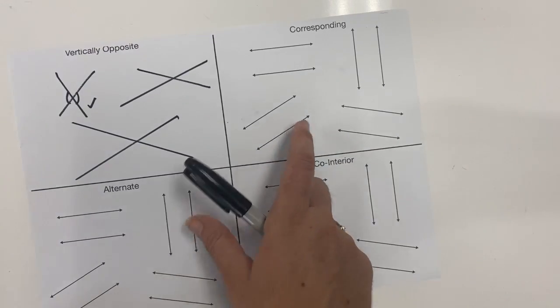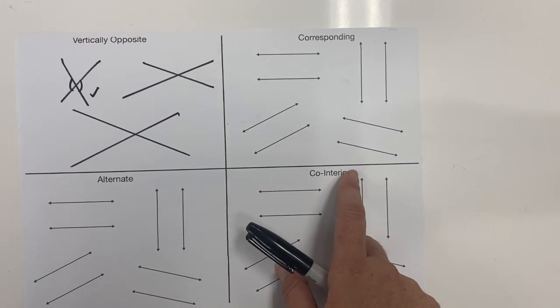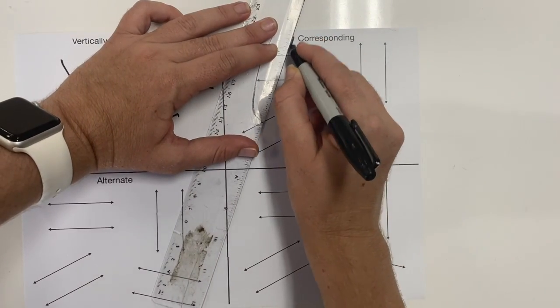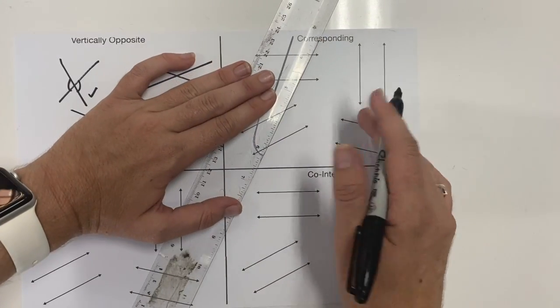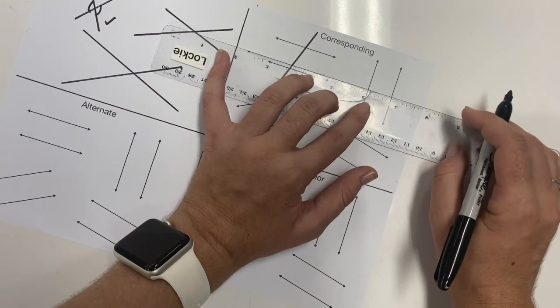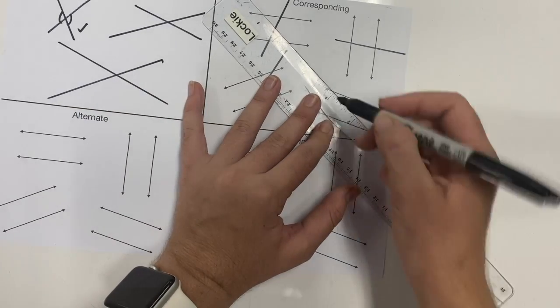For corresponding, I've put some parallel lines on here for you already. Now you just have to draw the transversal. Again, if you draw the transversal at different angles, some could be really straight, some could be really angled.